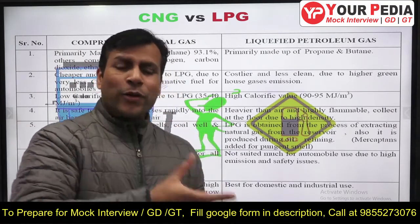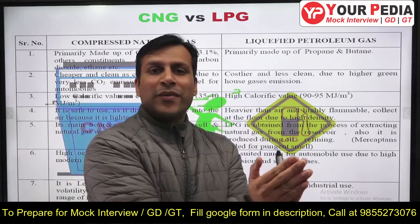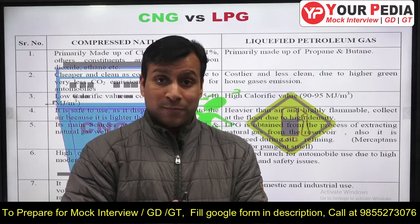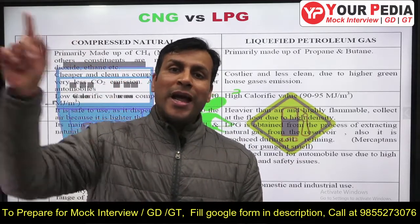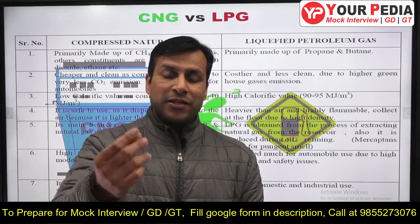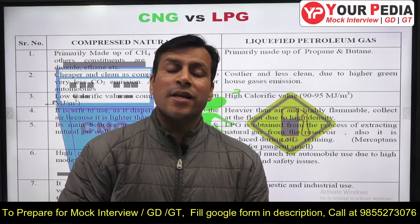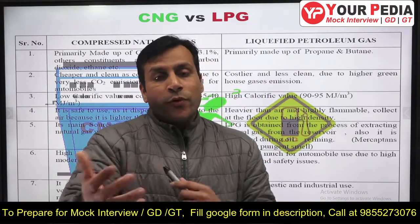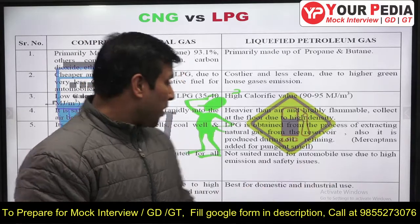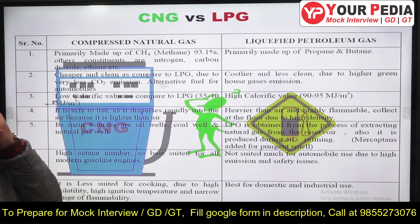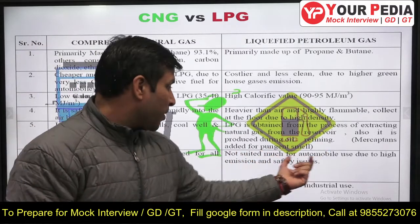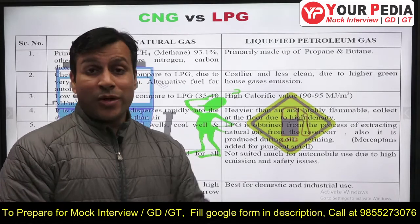Natural gas is directly obtained from oil wells or separate natural gas wells. LPG is also produced during the processing of crude oil. During the processing of natural gas, some cleaning and purification is required — for example, removing water molecules — and during this processing, LPG is obtained as a by-product. CNG is also notable for having a high octane number, making it the best alternative fuel for modern gasoline engines.